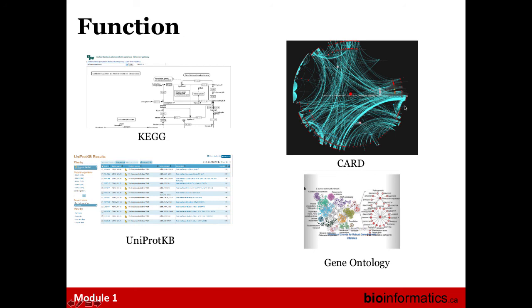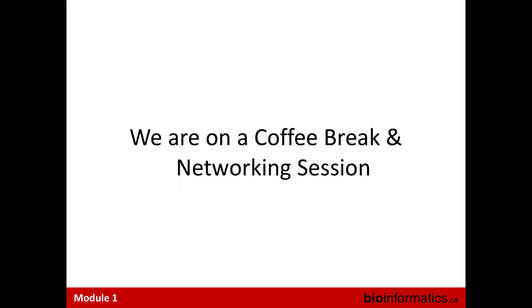Rob pointed out that CARD could also have some annotation issues that might give you the wrong prediction, but overall it's a high-quality, manually curated database for antimicrobial resistance genes. Gene Ontology provides consistent naming schemes for different functional proteins. Okay, any questions? If not, we can break for coffee.